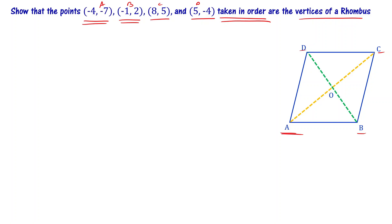You have to show A, then B, then C, then D in the same order. This order is important — if you don't take them in order, there is a chance of making a mistake.